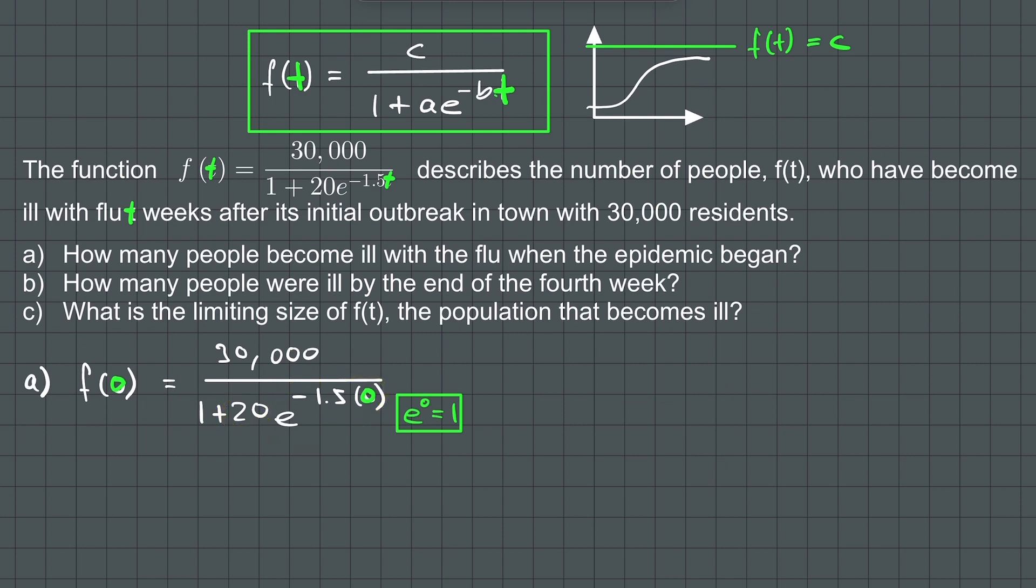So we get 30,000 over 21, which is approximately 1,429.